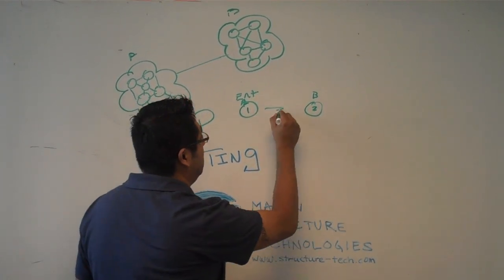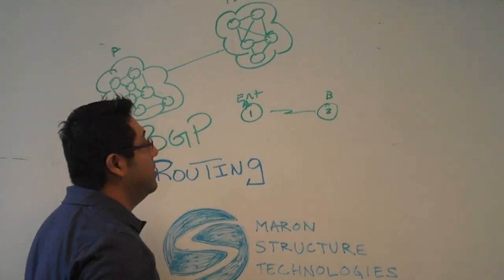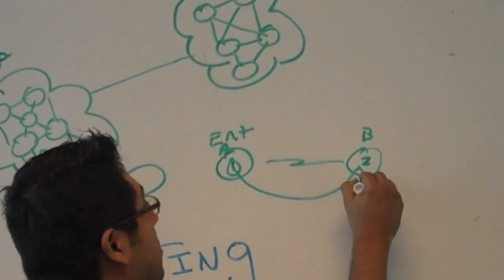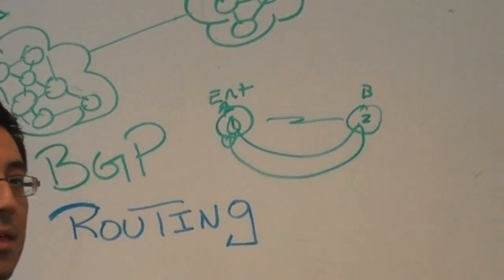It allows the transference of data between these two enterprises by the sharing of these autonomous numbers. Basically, 1 gets put into 2, 2 gets put into 1, and it allows the transference.